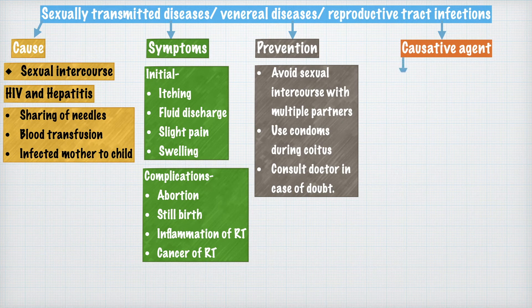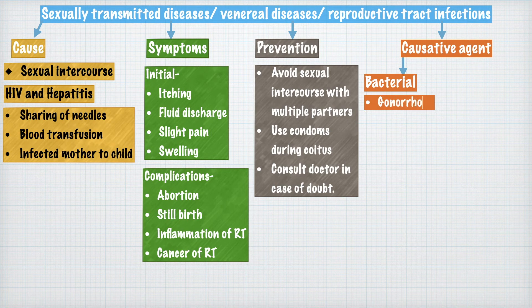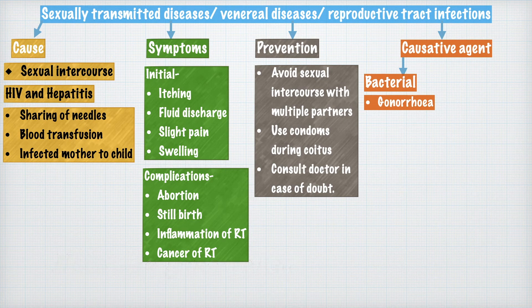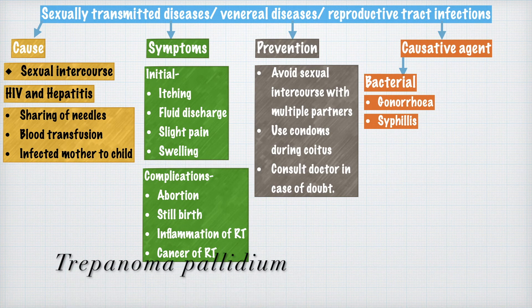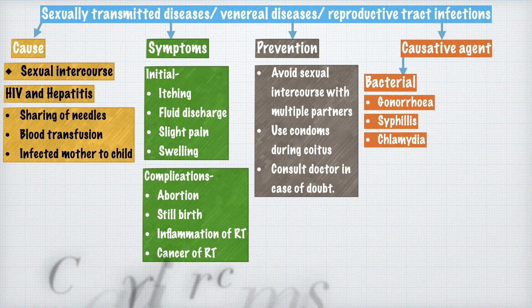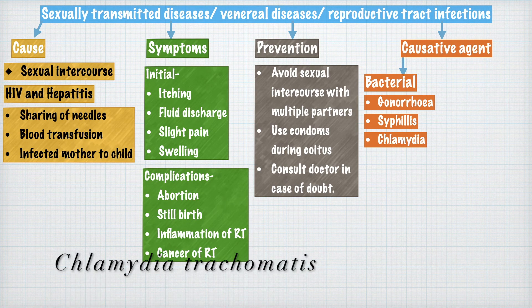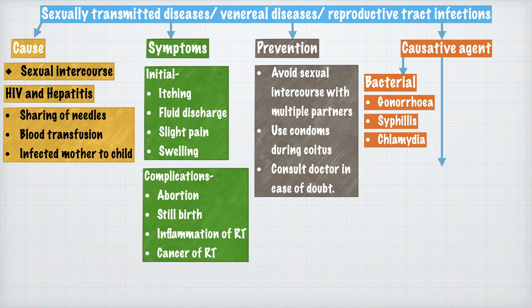There are various causative agents for STDs. The bacterial diseases include: gonorrhea, caused by Neisseria gonorrhoeae; syphilis, caused by Treponema pallidum; and chlamydia, caused by the bacterium Chlamydia trachomatis.